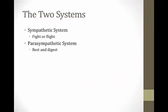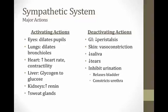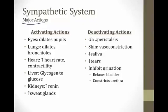The two systems within the autonomic nervous system are the sympathetic and parasympathetic. The sympathetic system handles fight or flight, and the parasympathetic handles rest and digest. The sympathetic nervous system activates in fight-or-flight situations — think of our ancestors with a woolly mammoth coming over the hill. The actions it takes are designed to help you survive that encounter.